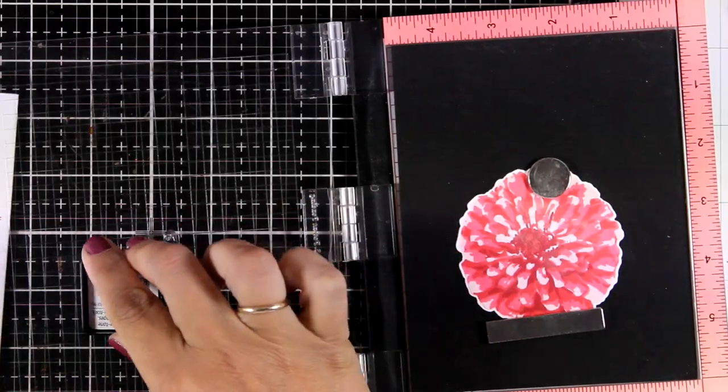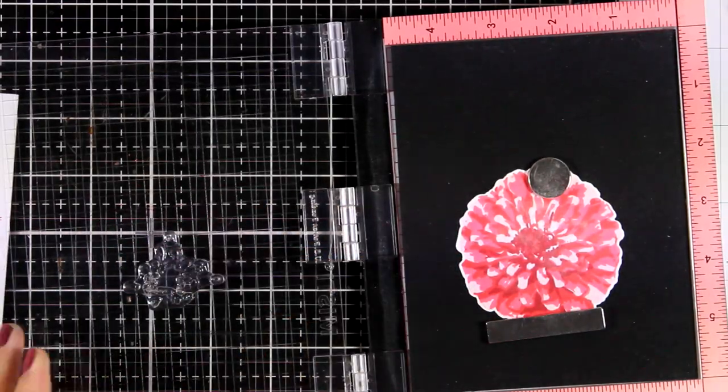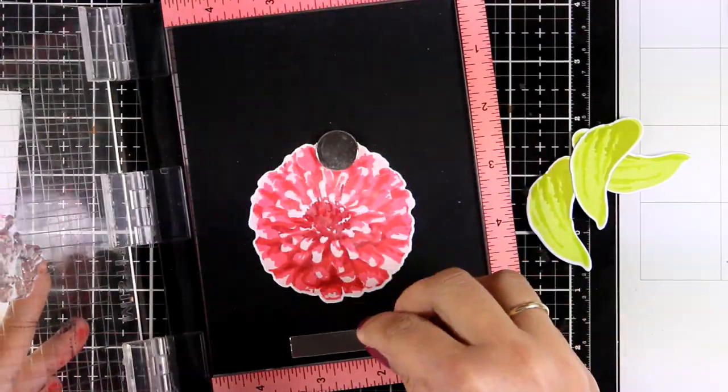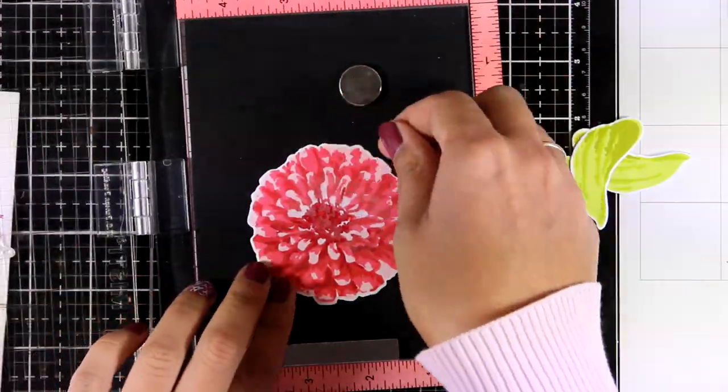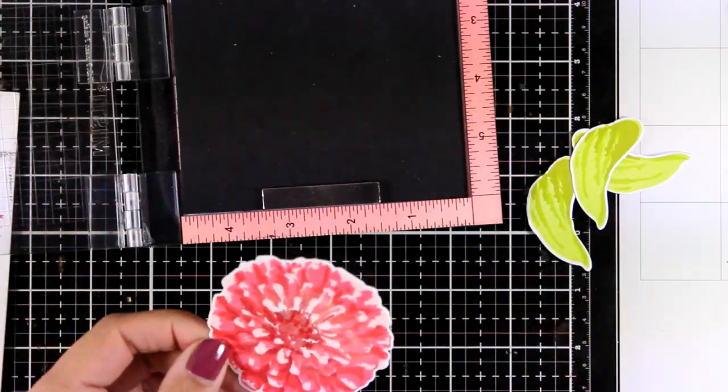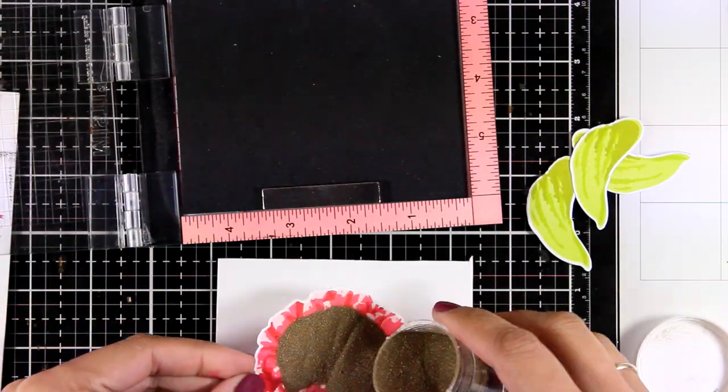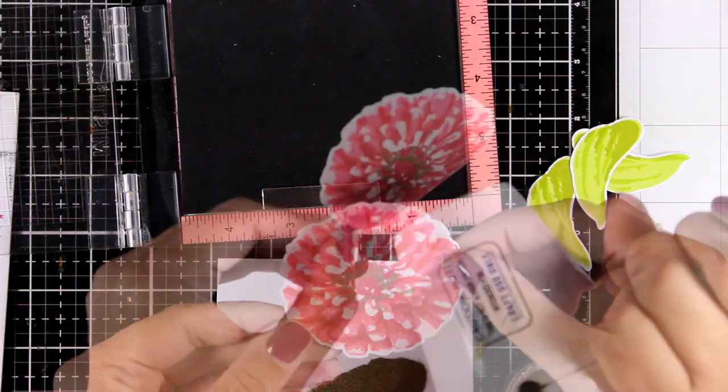I use the matching die to cut out the flower. Now I'm using embossing ink to stamp the last layer of the flower, and I'm going to apply some Antique Gold embossing powder just to add some shine at the center of my flower.